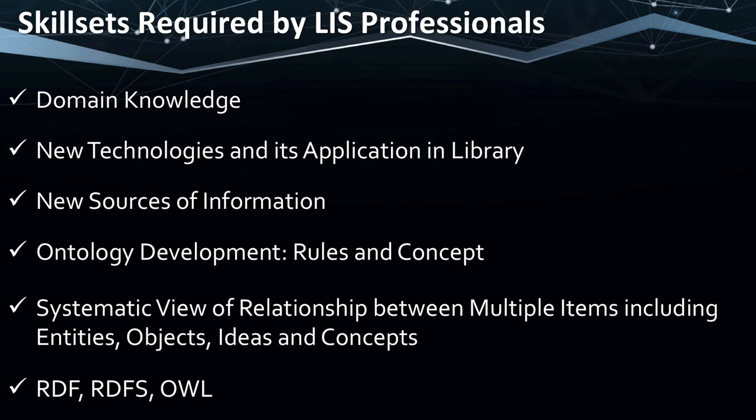Skill sets required by LIS professionals include domain knowledge — if working in IIT, basic concepts of engineering are necessary. Knowledge of new technologies and their library applications, and knowing new available resources, is essential. You should know how to develop ontology — you already know taxonomy and classification, and ontology has associated rules to learn. A systemic view of relationships between multiple items — entities, objects, ideas, and concepts — is what ontology involves. Technologies to learn include RDF (Resource Description Framework), RDFS (RDF Schema), OWL, and other technologies used for building ontology.